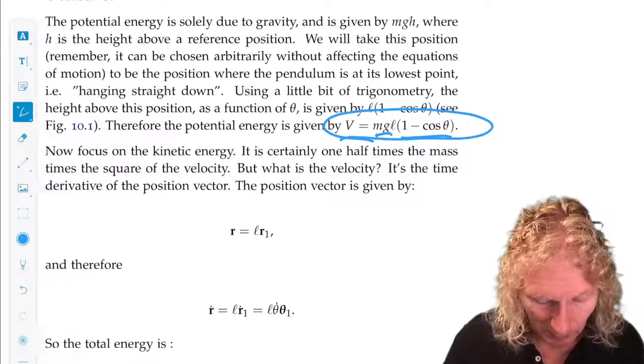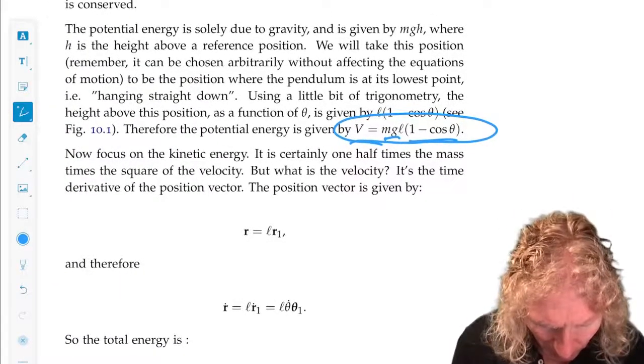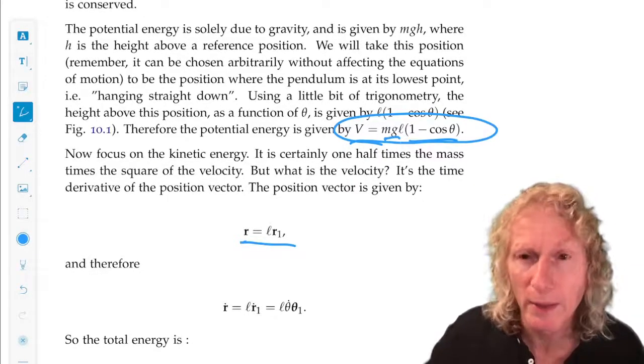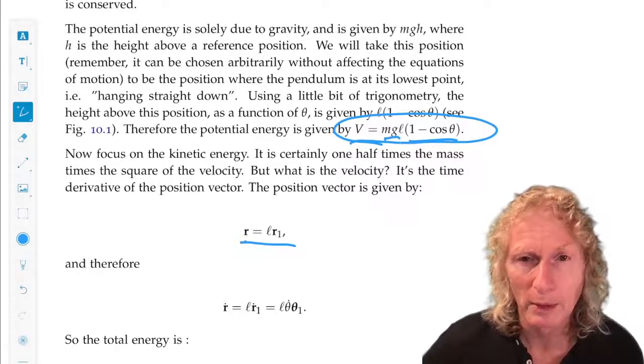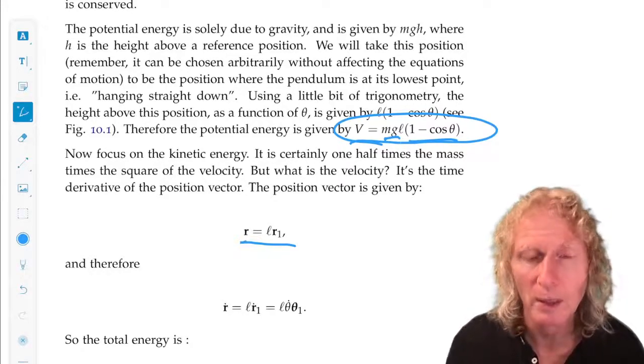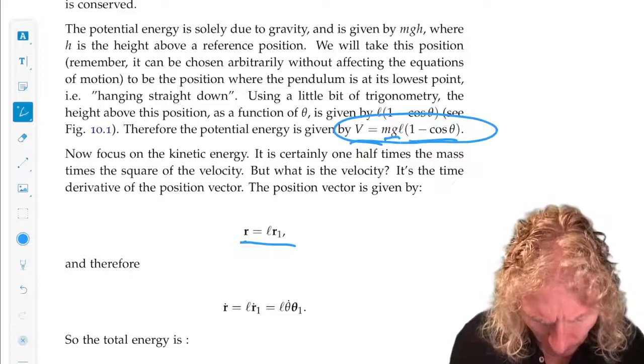Now let's get to the velocity which we need for the kinetic energy. The position vector, now we're going to use the R1, theta1 unit vectors that we've derived earlier, and we learned how to differentiate them with respect to time. So the position vector is L, the length, multiplied by the unit vector R1.